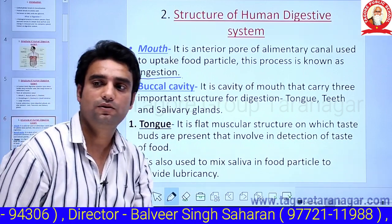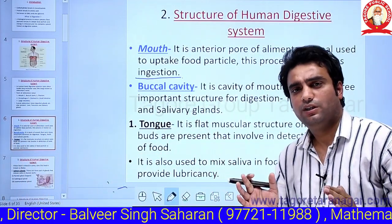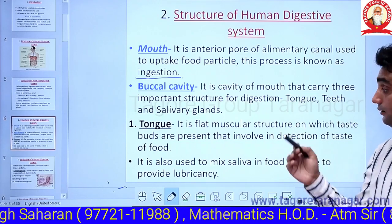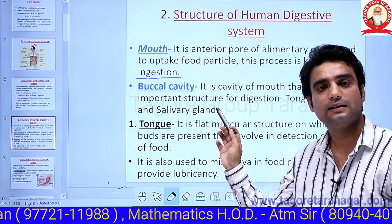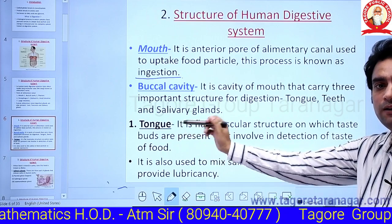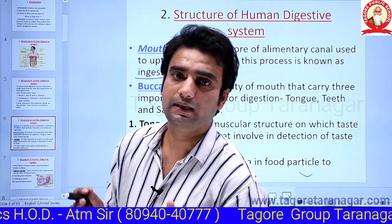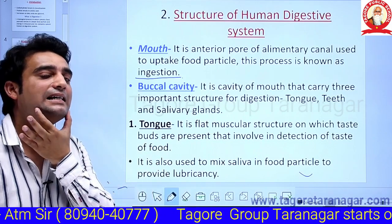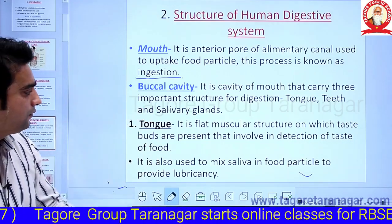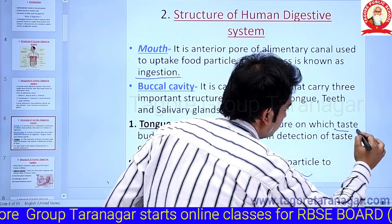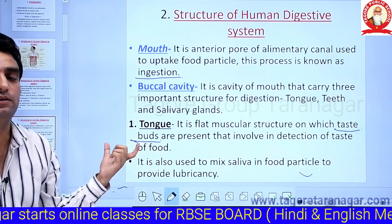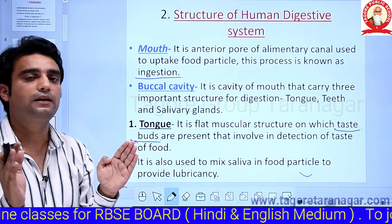Inside the mouth, a space is present — a cavity — and that cavity is known as the buccal cavity. Inside the buccal cavity, there are three important parts involved in digestion: number one is the tongue, second is the teeth, and third is the salivary gland. The first part, the tongue, is a flat muscular structure situated at the base of the buccal cavity. On the surface of the tongue, specific cells are present known as taste buds.